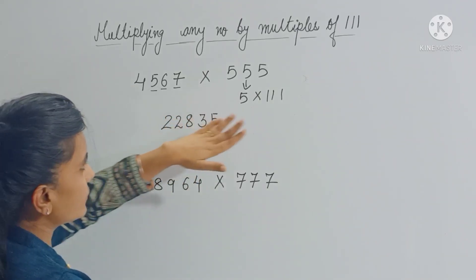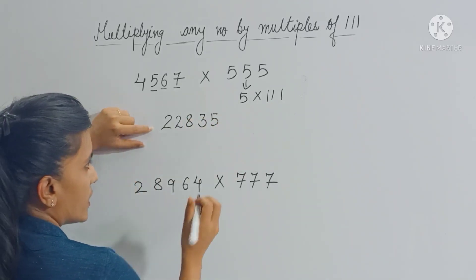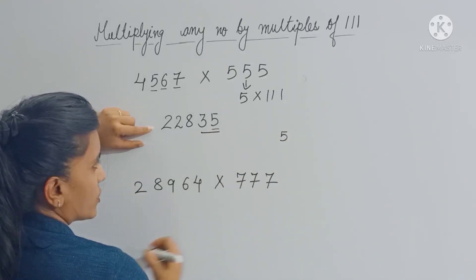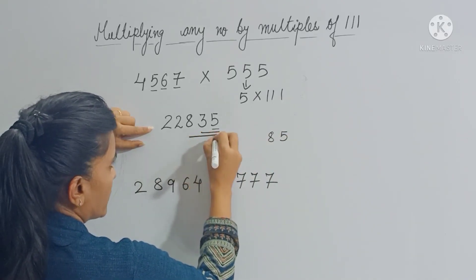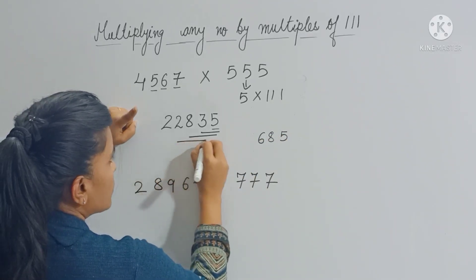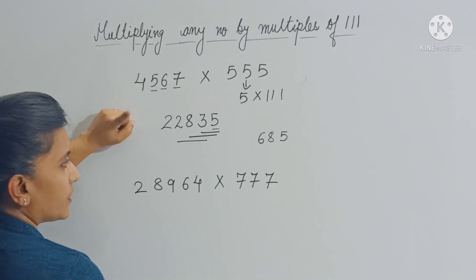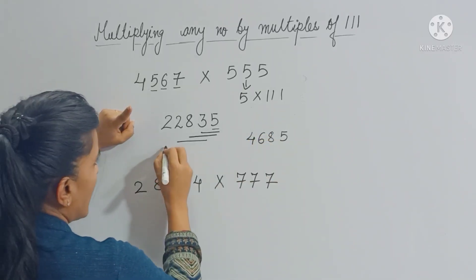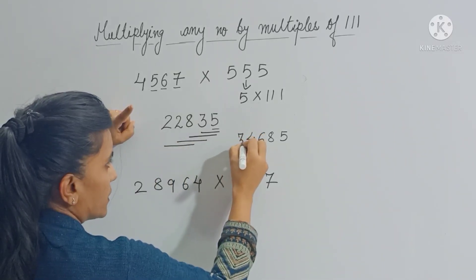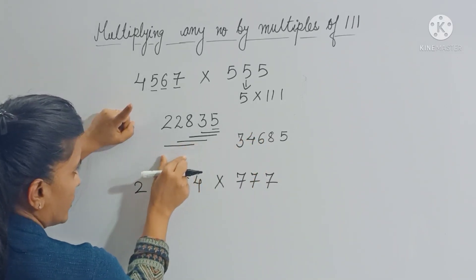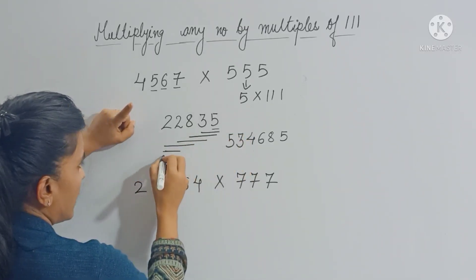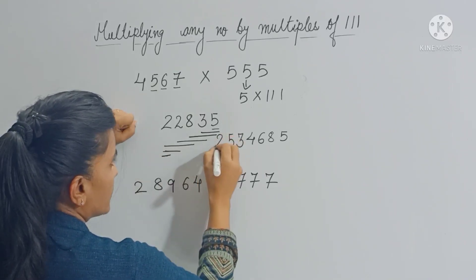Now let's multiply 22835 by 111 using the trick. Copy 5 as it is. Then add these two digits to get 8. Add these three digits to get 16 — write 6 and carry forward 1. Now add these three digits to get 13, plus 1 carry gives 14 — carry forward 1. Start reducing: add 2 plus 2 = 4, plus 1 carry = 5. The last digit is 2. This is your final answer.